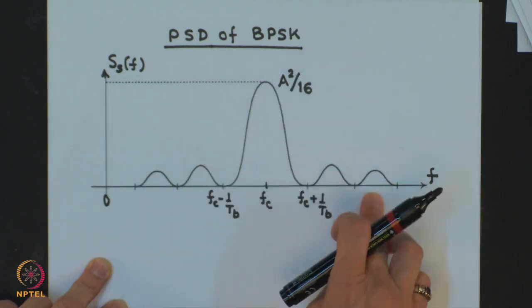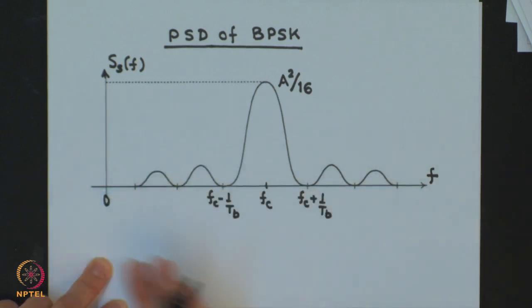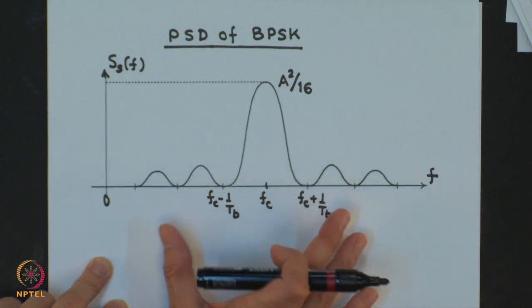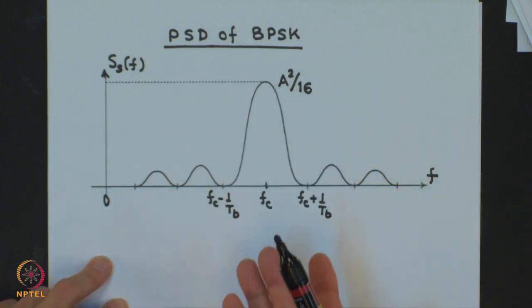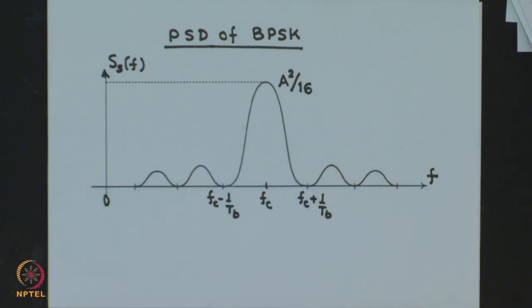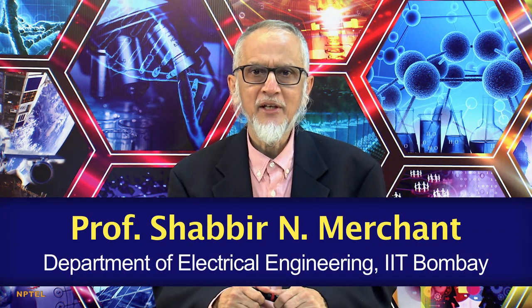If F_C is very high, the lobes from the left-hand side will die out. Again, we can find the bandwidth for BPSK, which is the same as for BASK. The next parameter of the carrier wave which we can change is the frequency, and if we do that we get what is known as binary frequency shift keying, which we will study next time.